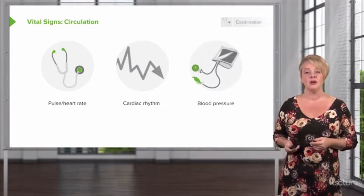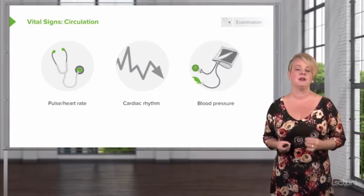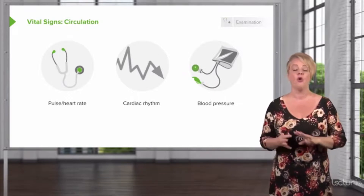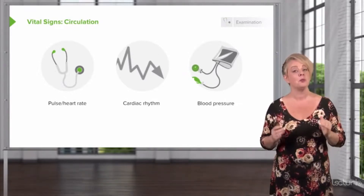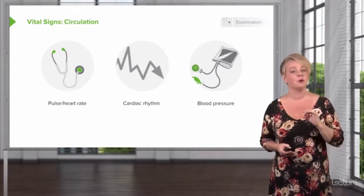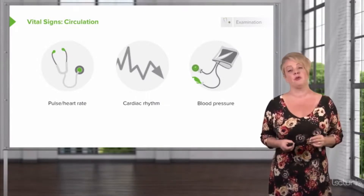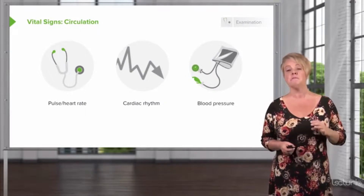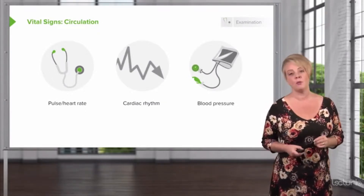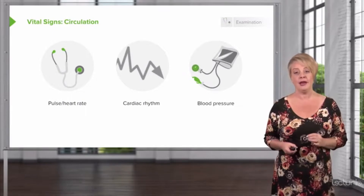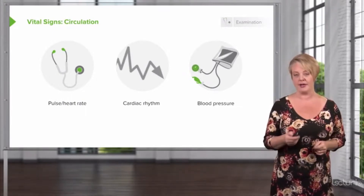Blood pressure is the bottom line for C, much like pulse ox is for breathing. The whole point of the circulatory system is to send blood to the vital organs, and if blood pressure is low, the perfusion pressure for those organs will be low, meaning circulation is inadequate. So even for a patient with a normal heart rhythm and rate, if they're hypotensive, we have a C problem and we need to take care of it.